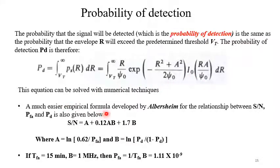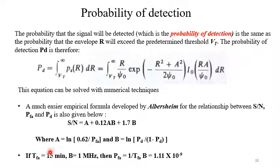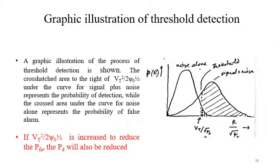An easier empirical formula is given by Albersheim relating SNR, P_FA, and P_D: (S/N) = A + 0.12·A·B + 1.7·B, where A = ln(0.62/P_FA) and B = ln(P_D/(1−P_D)). As an example, if T_FA is 15 minutes and B is 1 MHz, then P_FA = 1/(T_FA · B) = 1.11 × 10⁻⁹. This is the probability of false alarm for this particular system.